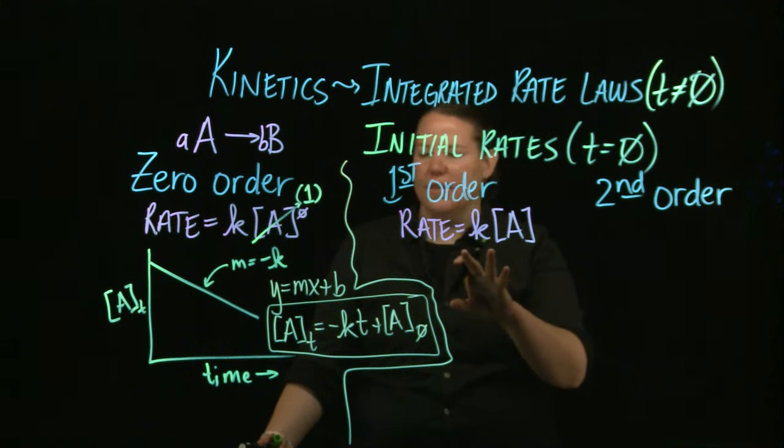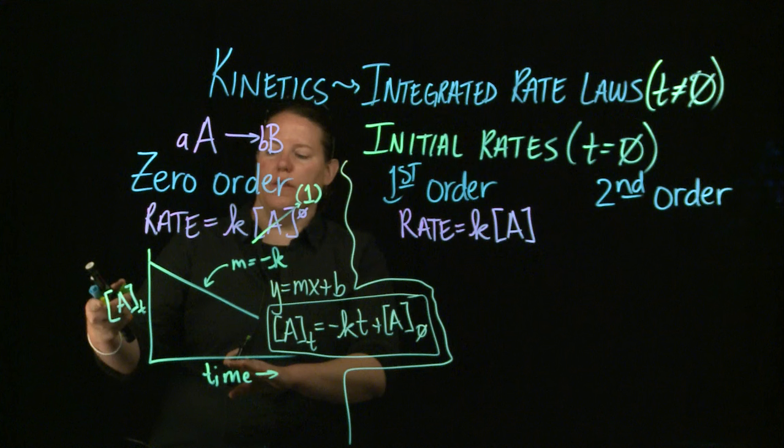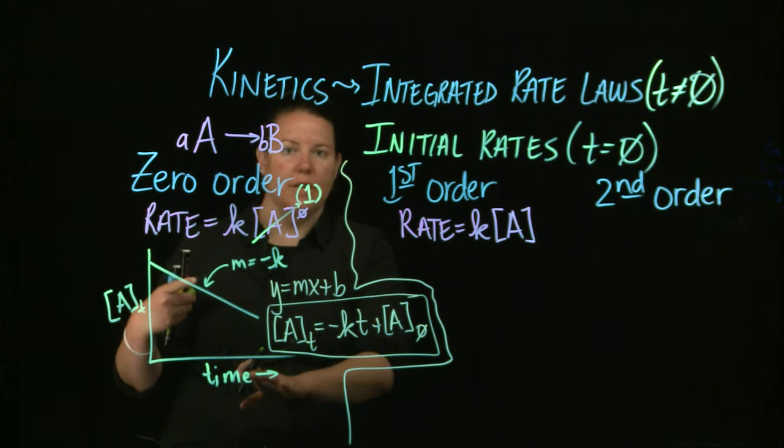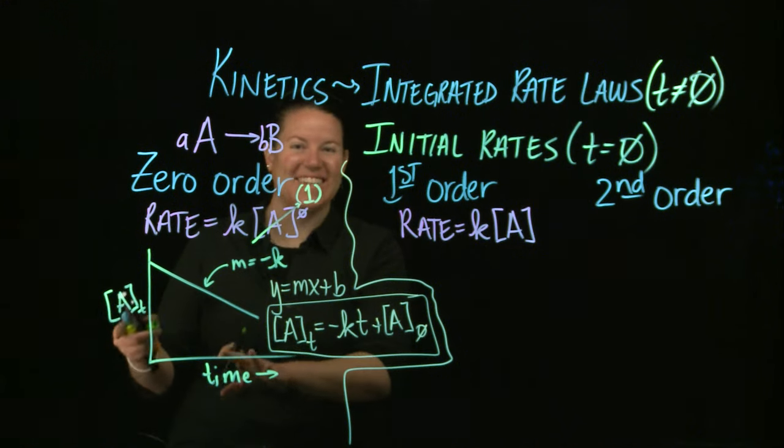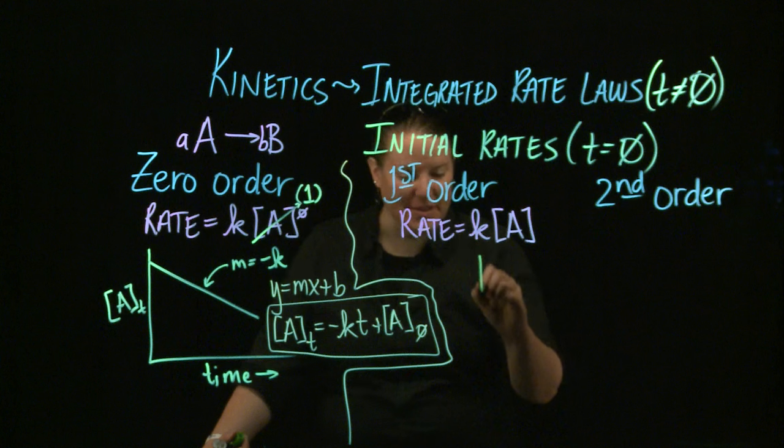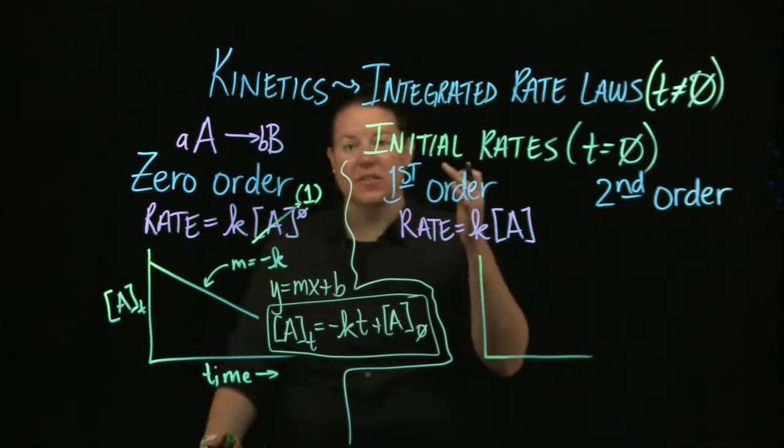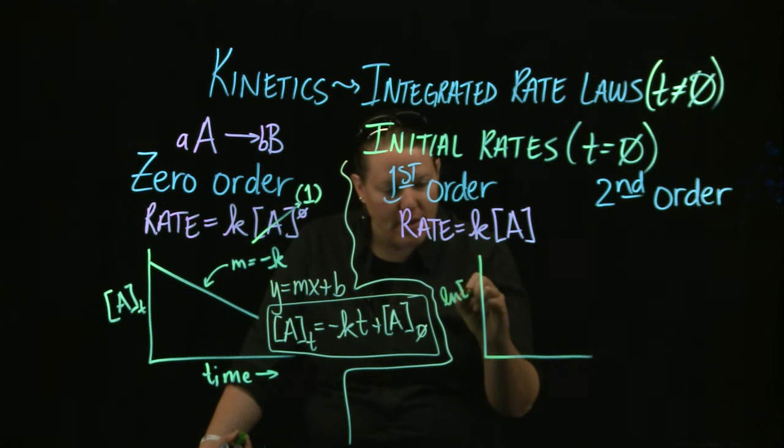So if you plotted this in this kind of fashion, right, so I did the concentration of A over time versus time, you get a logarithmic graph. It is not a straight line. And we want to use the equation of the line to describe this. So what we do is we start manipulating things, right. We basically manipulate the y-axis until it gives us a nice straight line.